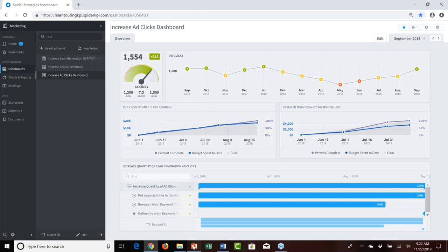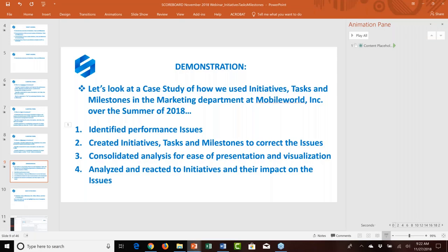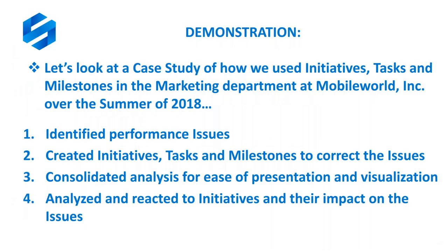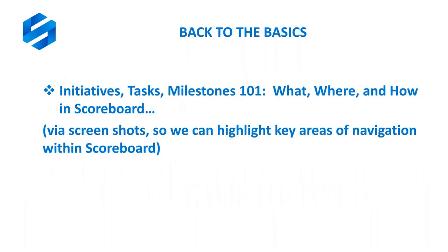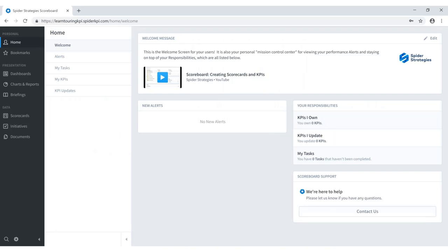That wraps up the demonstration. A quick review: we identified performance issues, created the initiatives, tasks, and milestones, consolidated the analysis, and used that analysis to understand what impact they were having on the actual business. Now, getting a bit academic — initiatives, tasks, and milestones 101: what are they, where are they, and how do you set them up in Scoreboard? We'll start from the home page.